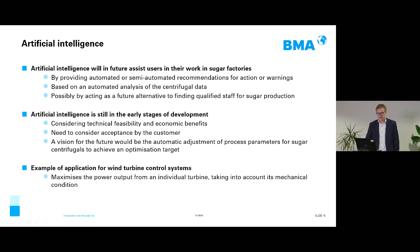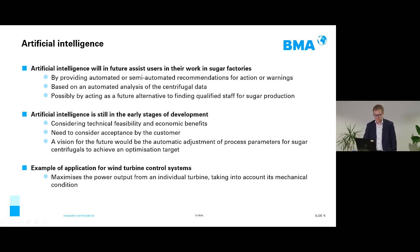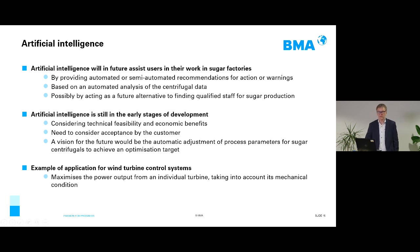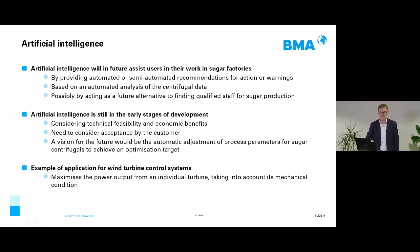Taking an example again from wind turbines: wind turbine operators have already installed control systems which rely on artificial intelligence. Such a system optimizes the power generation of an individual wind turbine with respect to the mechanical condition.